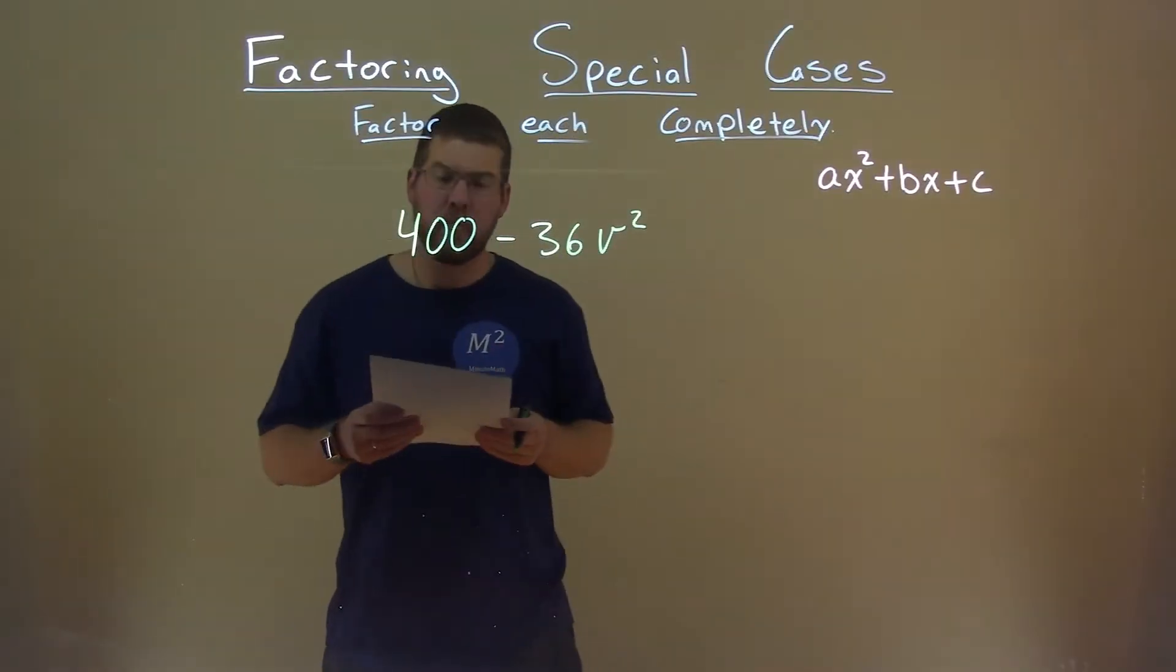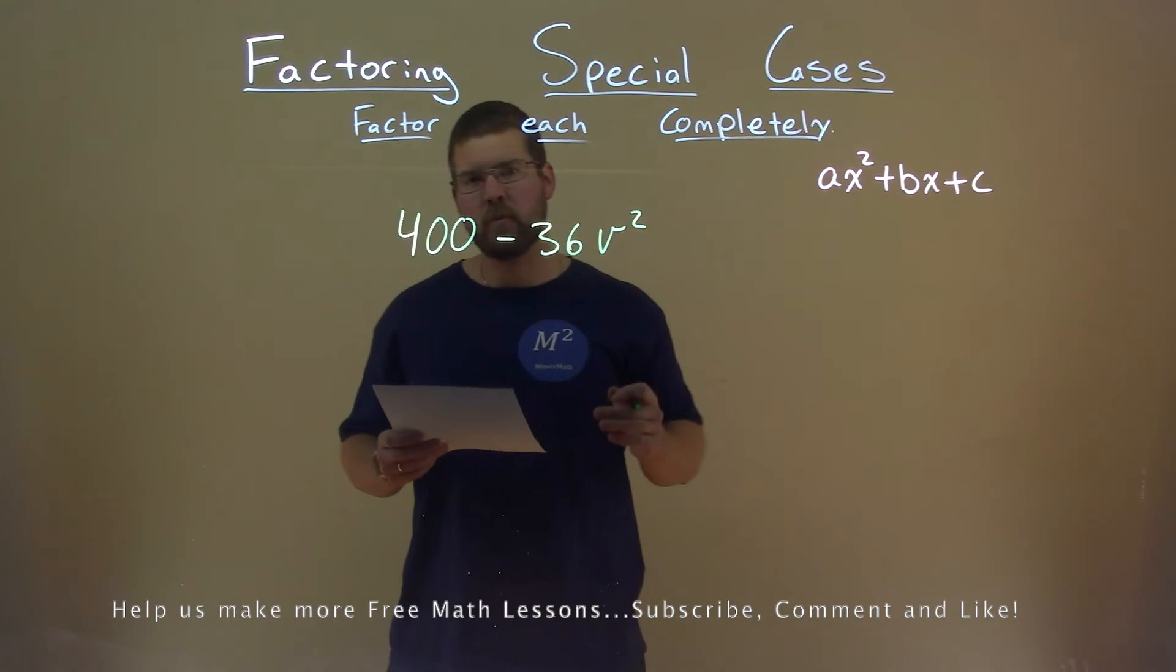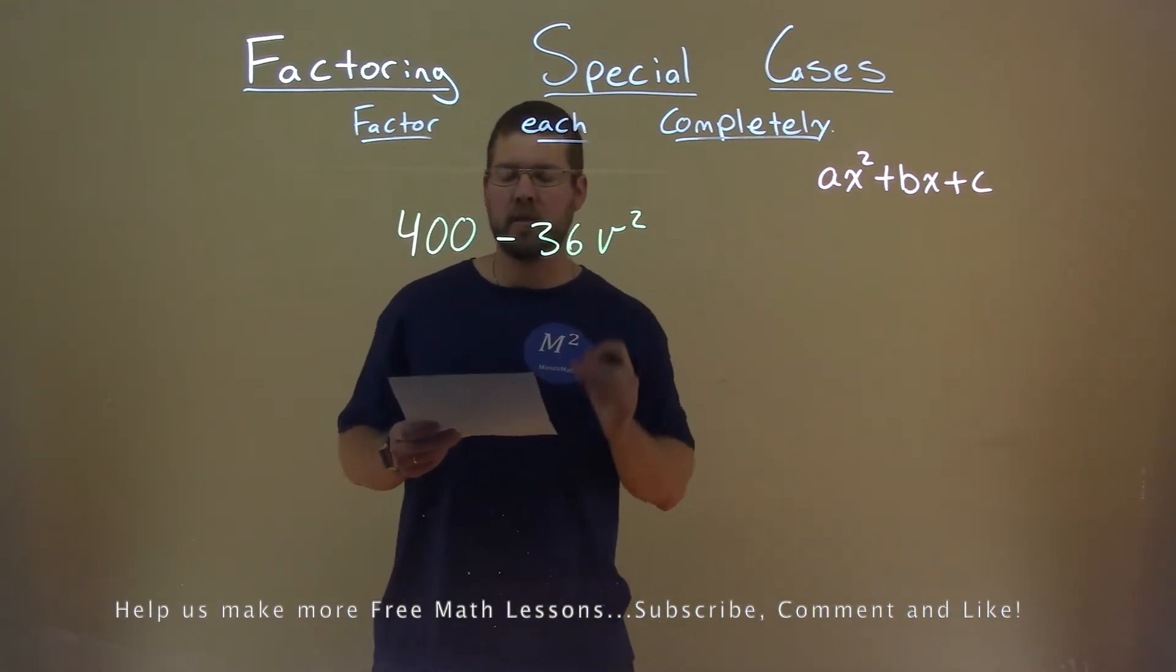We're given this problem right here, 400 minus 36V squared, and we need to factor this completely.